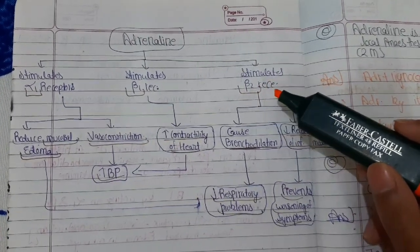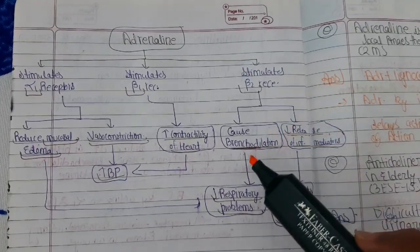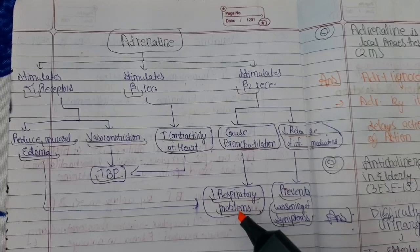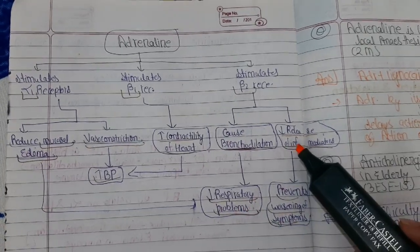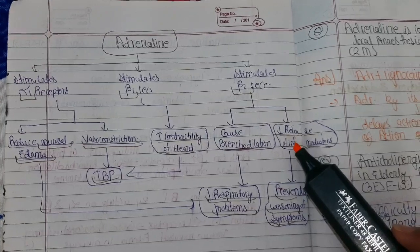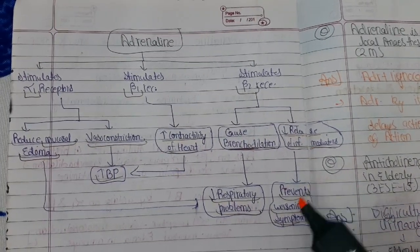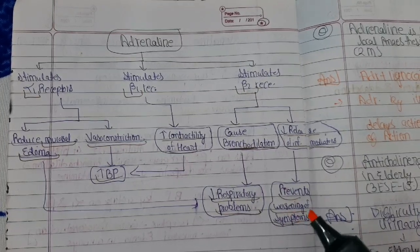2 receptors. By stimulating beta-2 receptors, it causes bronchodilation, which decreases respiratory problems. By stimulating beta-2 receptors, it also decreases the release of inflammatory mediators, which prevents worsening of symptoms.